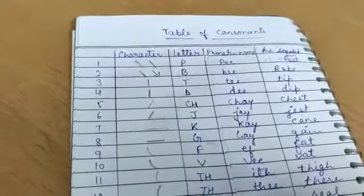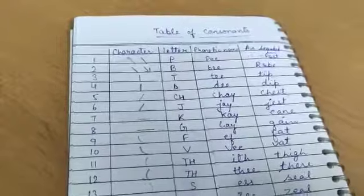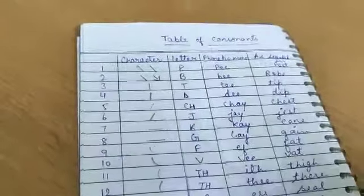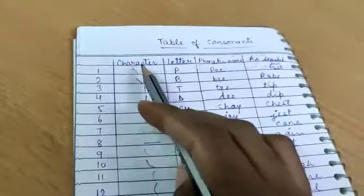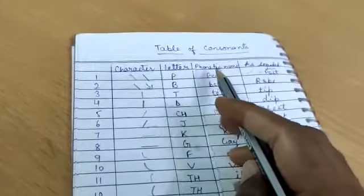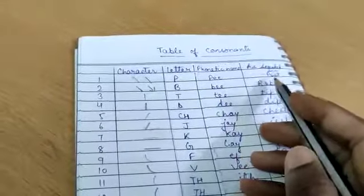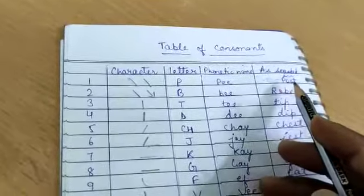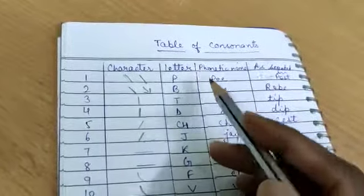Today we will discuss the whole table of consonants. As you can see here, characters are given, letters, then phonetic name, then words in which you can hear the character, the letter.